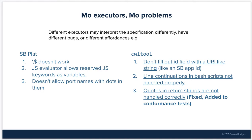The Seven Bridges platform doesn't allow port names with dots in them, while CWL tool does. In CWL tool, I discovered that if an app's ID looks like a URI, which is often present in apps developed in the Seven Bridges platform, CWL tool will try to interpret linked processes as belonging to that base ID. In CWL tool, line continuations in bash scripts are not handled properly. CWL tool until recently had a bug where quotes in return strings were not handled correctly, which was reported and fixed just before this talk was made.